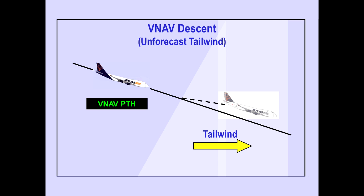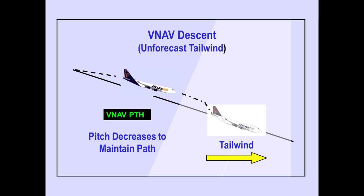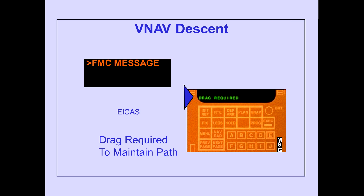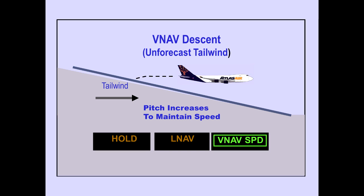During a VNAV descent, an unforecast tailwind will cause the airplane to move above the VNAV path. As the airplane moves above the VNAV path, the FMC directs a decrease in pitch to maintain the path and speed will increase. The FMC message 'drag required' is displayed when drag is required to maintain the VNAV path. If speed increase is excessive or the airplane is too far above the VNAV path, the FMC directs a departure from the path and pitch to increase, and the autopilot pitch mode changes to VNAV speed.